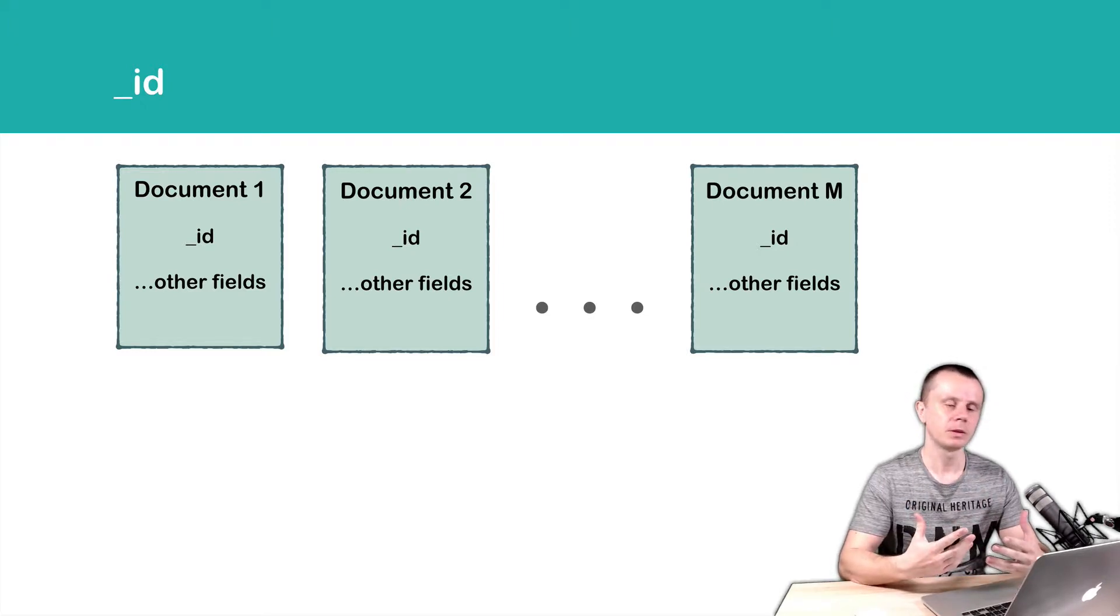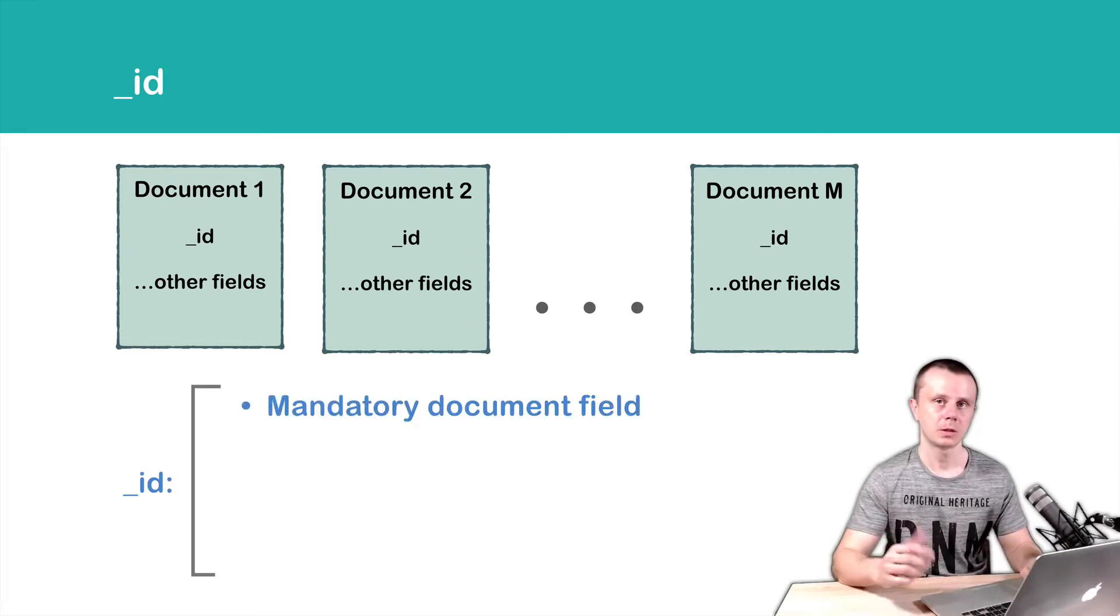The name of this field is special and reserved—it is underscore ID, so you cannot use it for your own purposes. It is just for identification of MongoDB documents. That's why underscore ID is a mandatory field that must be present in each document in a MongoDB database.